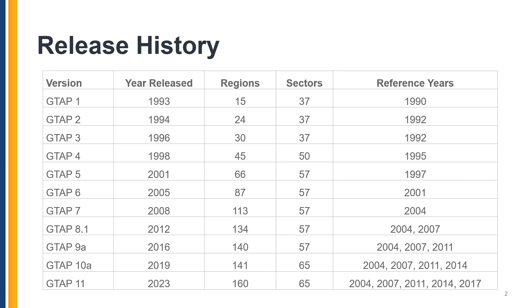Another important feature of the GTAP database that has been added since version 8 is the reporting of multiple reference years. With each new release, a new reference year has been added. In GTAP 11, there are five reference years being reported: 2004, 2007, 2011, 2014, and 2017. Since we use large datasets, the reference year lags behind the release year as collection and reconciliation of the data inputs used in the construction of the database takes considerable time.